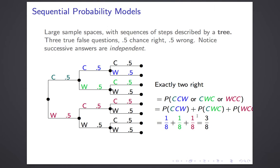Once you know that, you can figure out anything. For example, the chance of getting two out of three questions right: there are three ways to do that — first two correct and last wrong, middle wrong and others correct, or first wrong and other two correct. Those are disjoint outcomes, each with probability 1/8. So by the sum rule, the probability of scoring 67% on this test is 3/8.